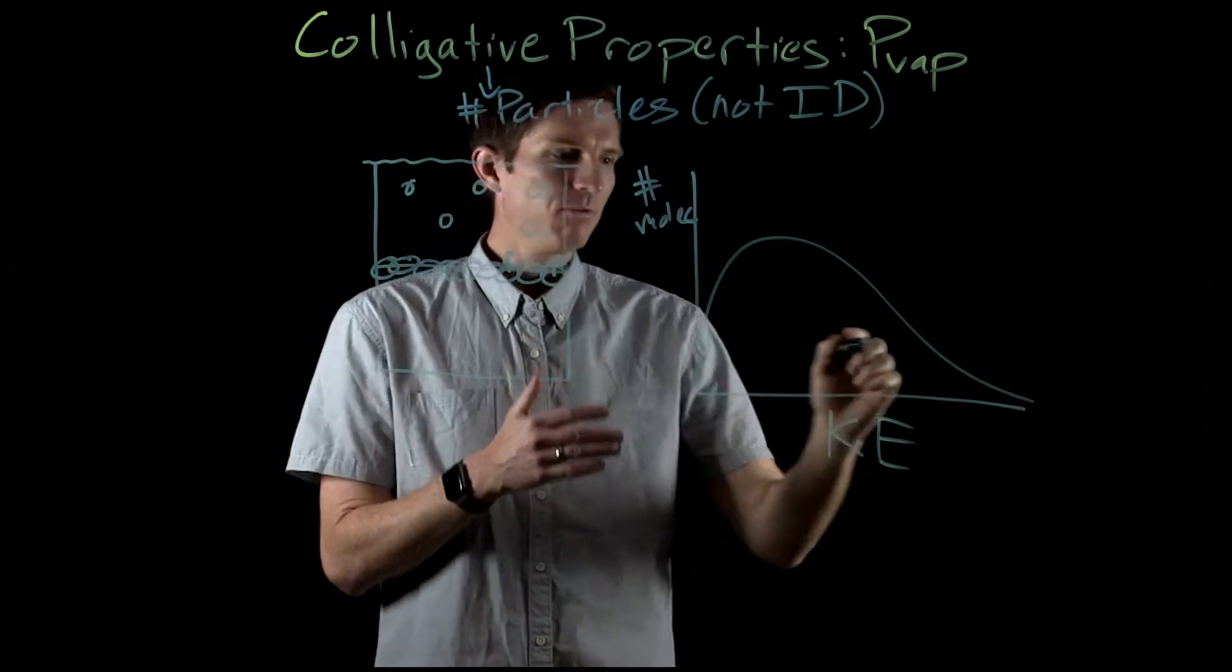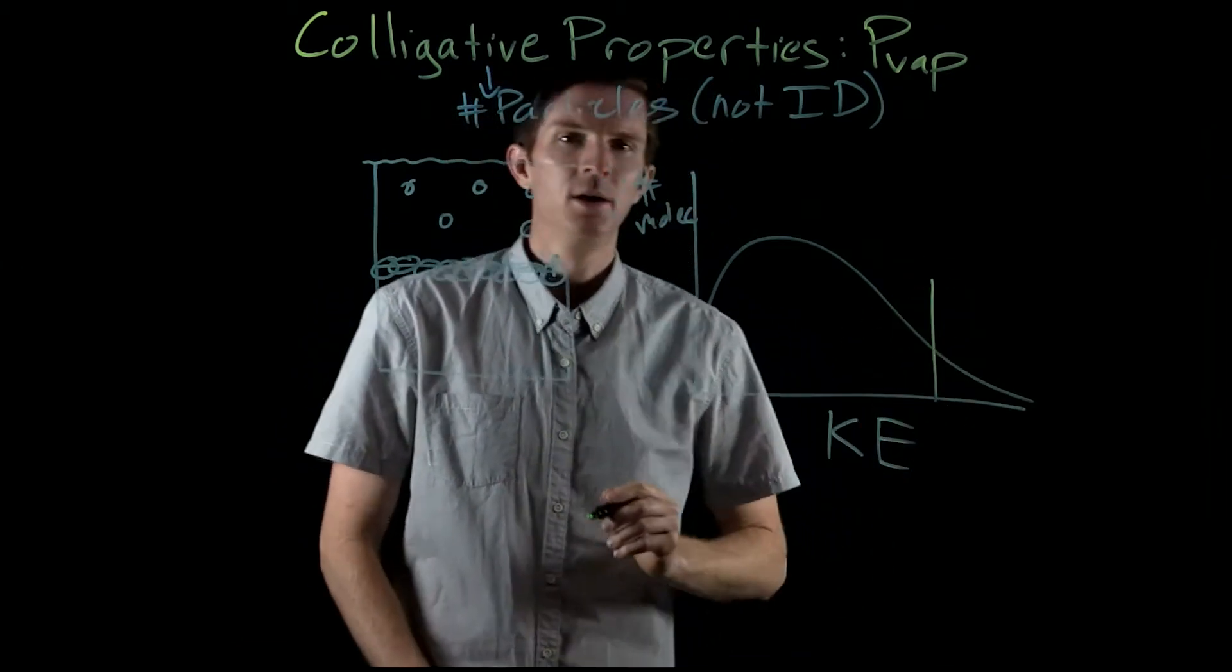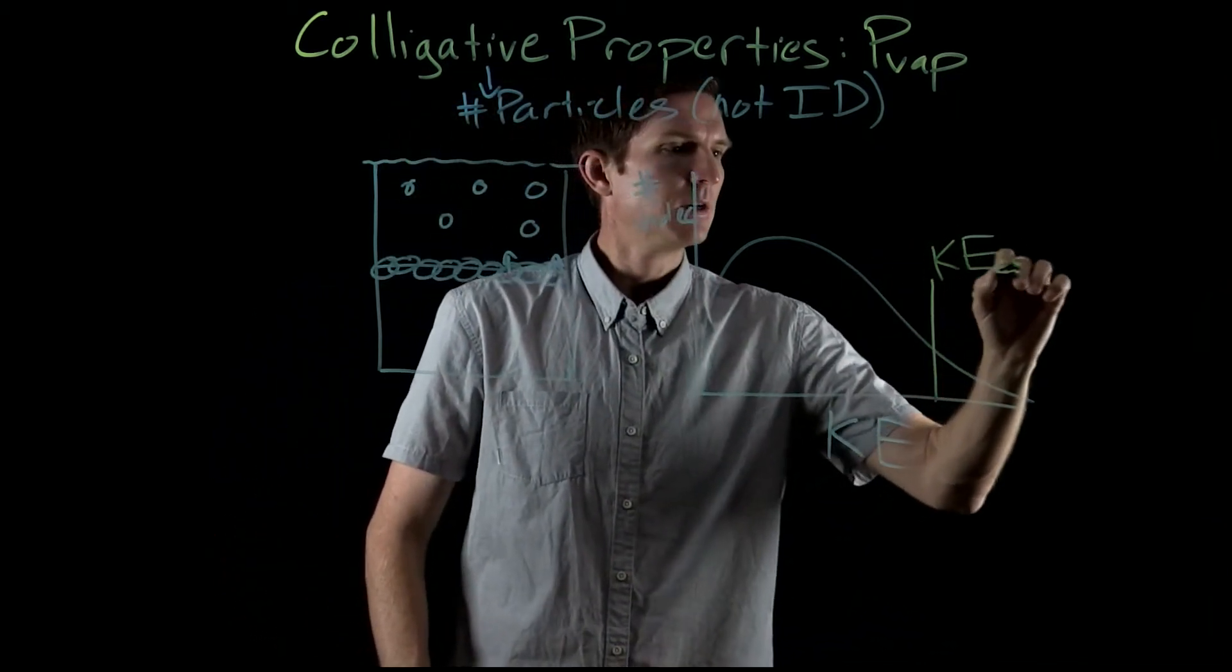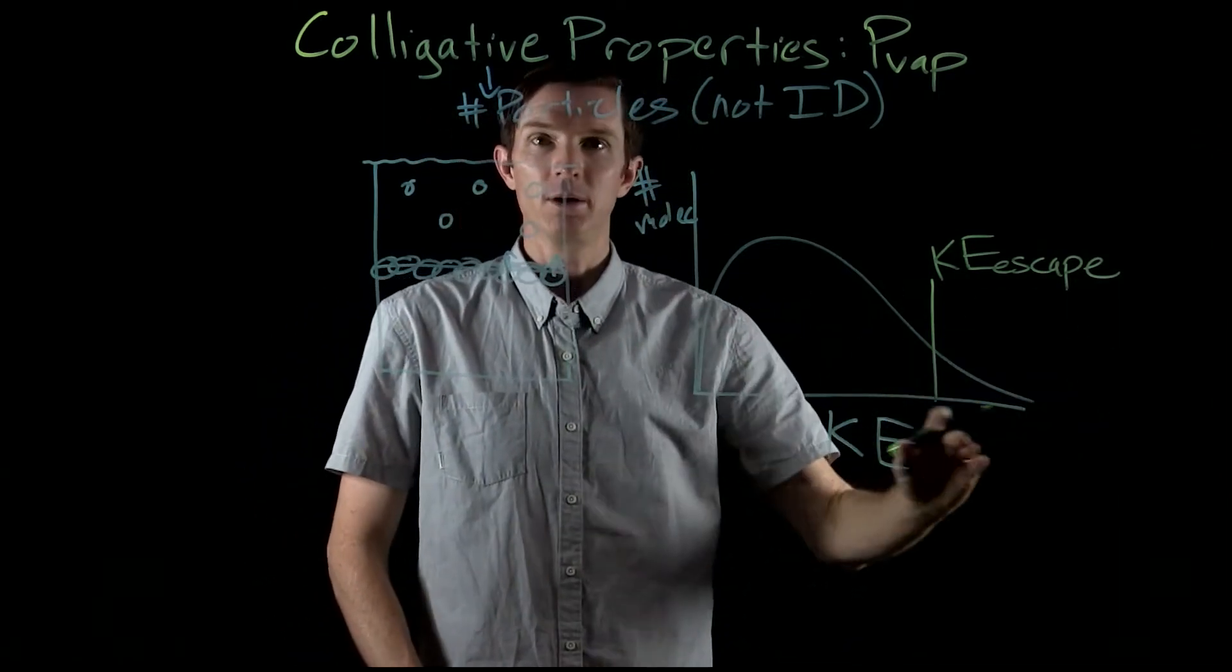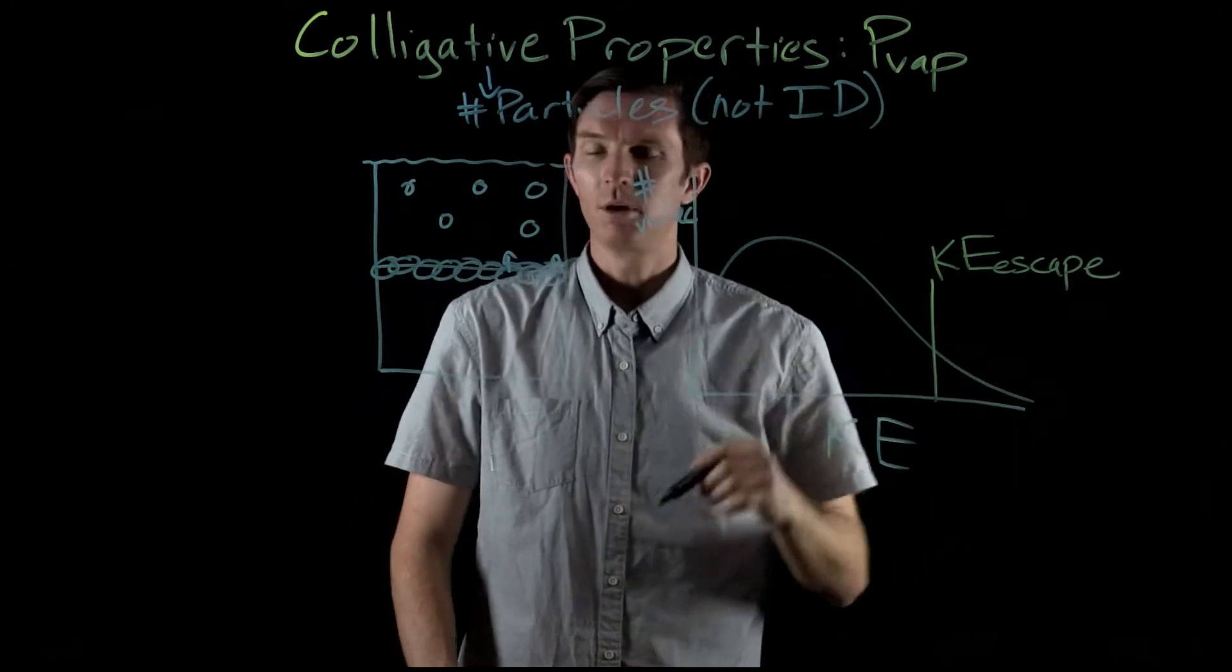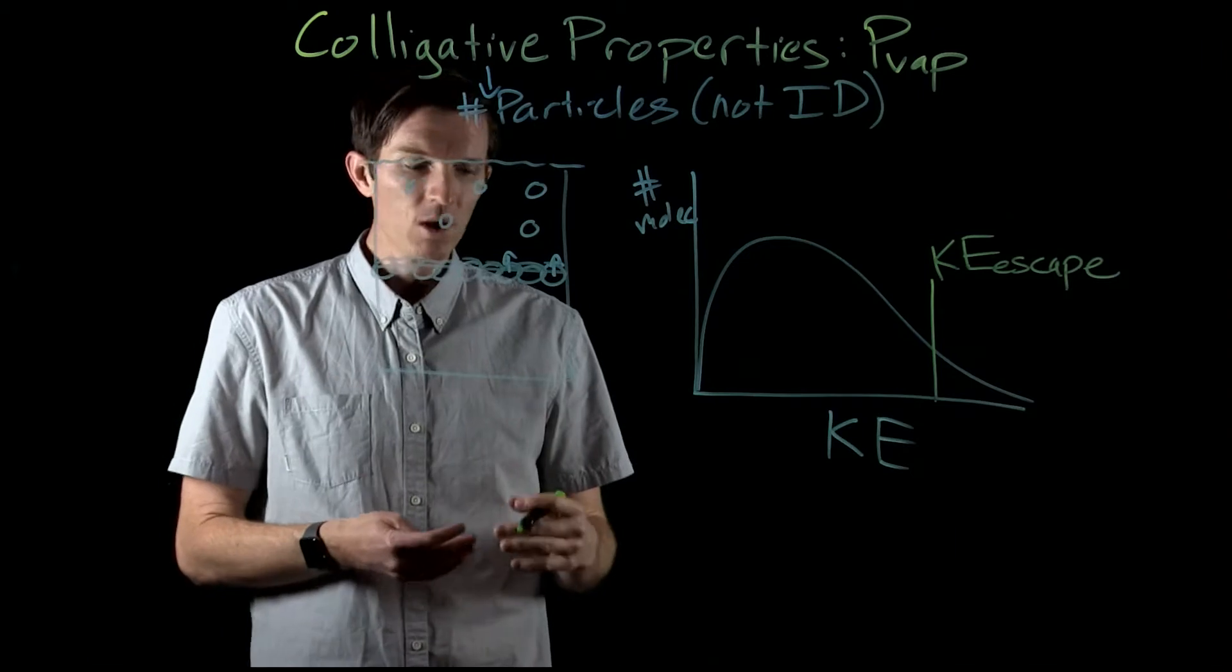We're looking at what allows a liquid particle to leave is that they have enough kinetic energy to escape. So they have a kinetic energy greater. Any of these particles sitting up here. So if we're looking at the vapor pressure, all these particles up here are contributing to the vapor pressure. Now we're just thinking about the pure liquid.